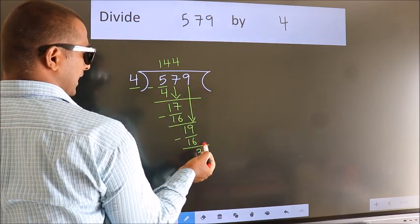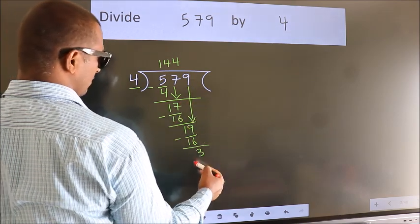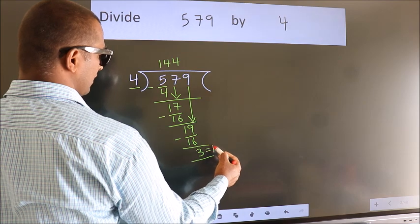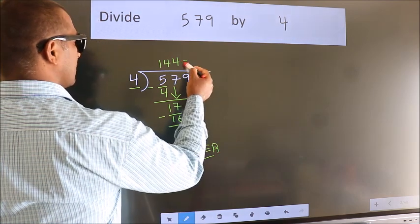No more numbers to bring it down. So, we stop here. This is our remainder. This is our quotient.